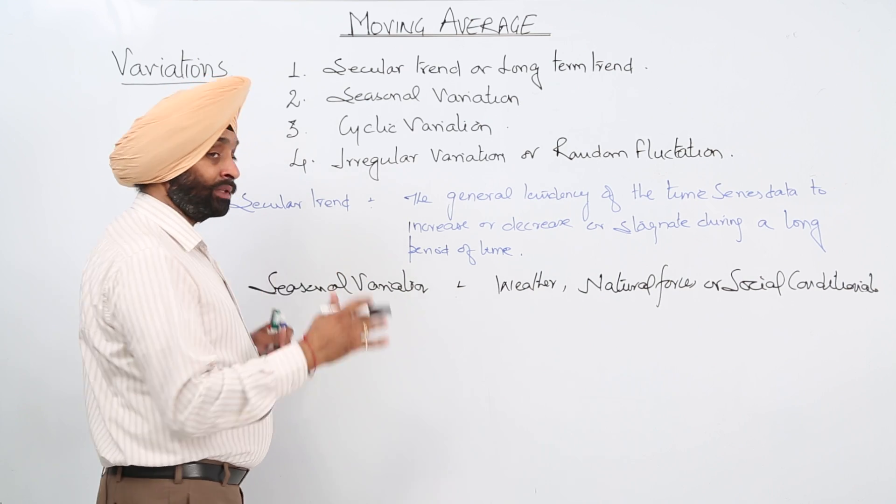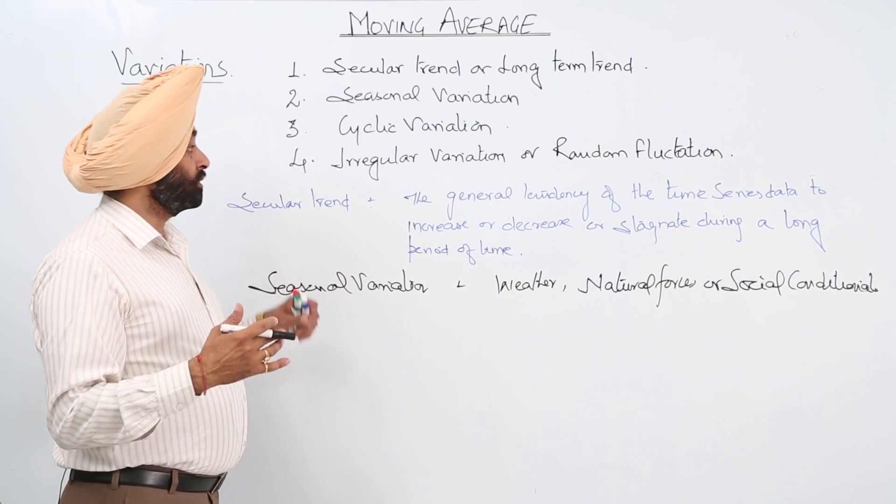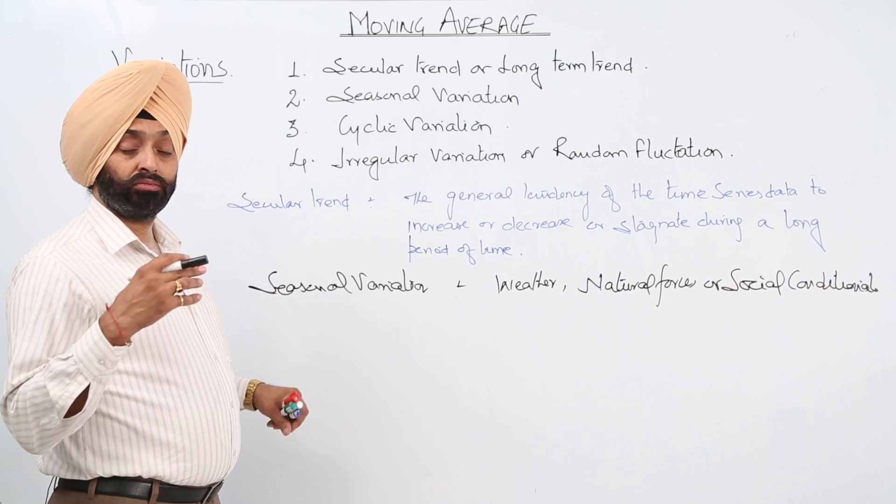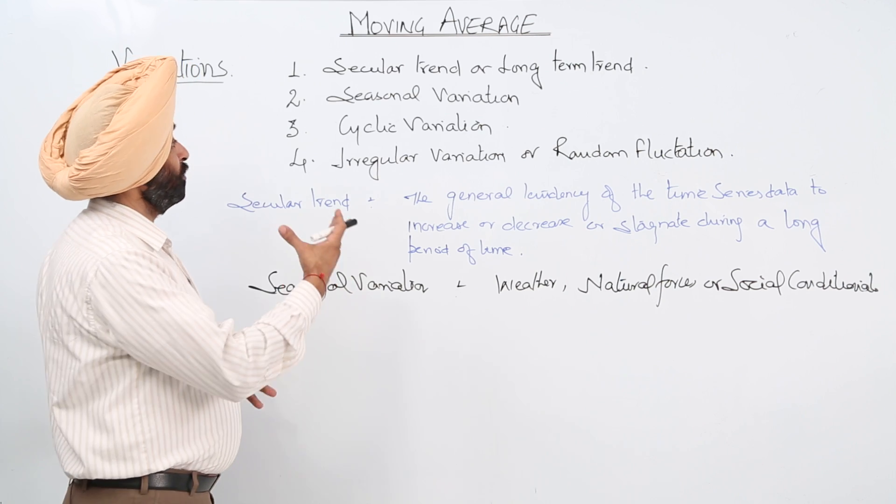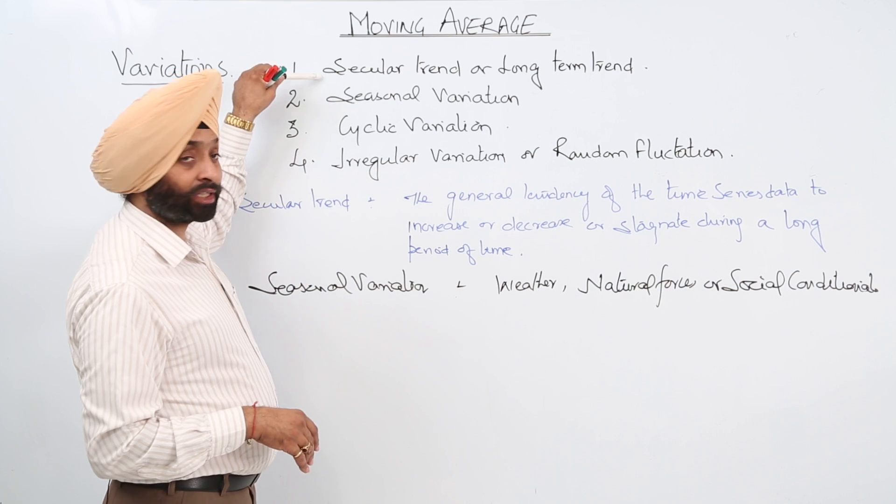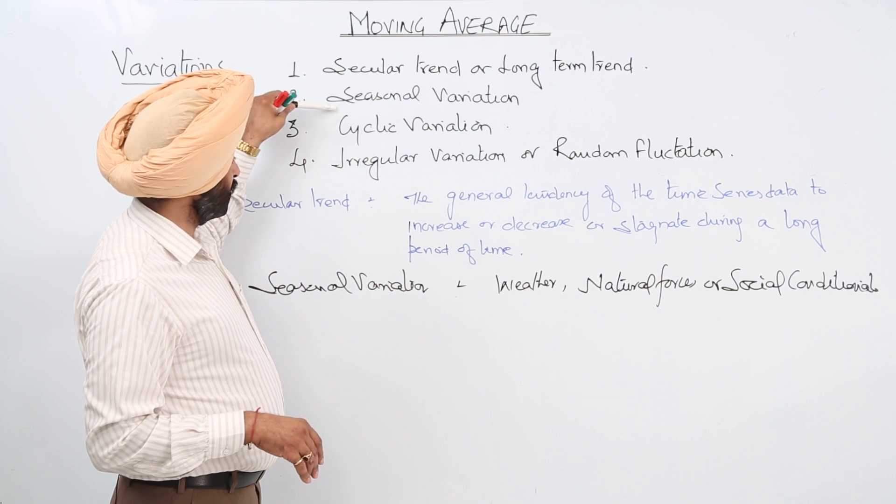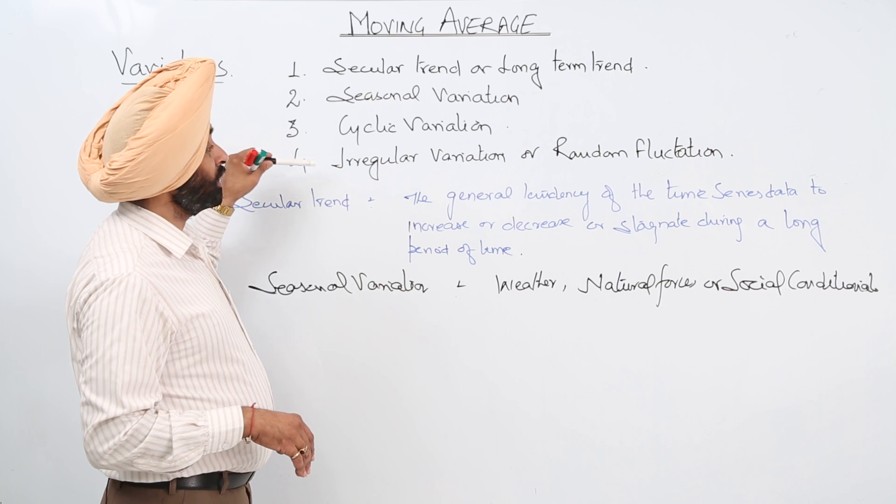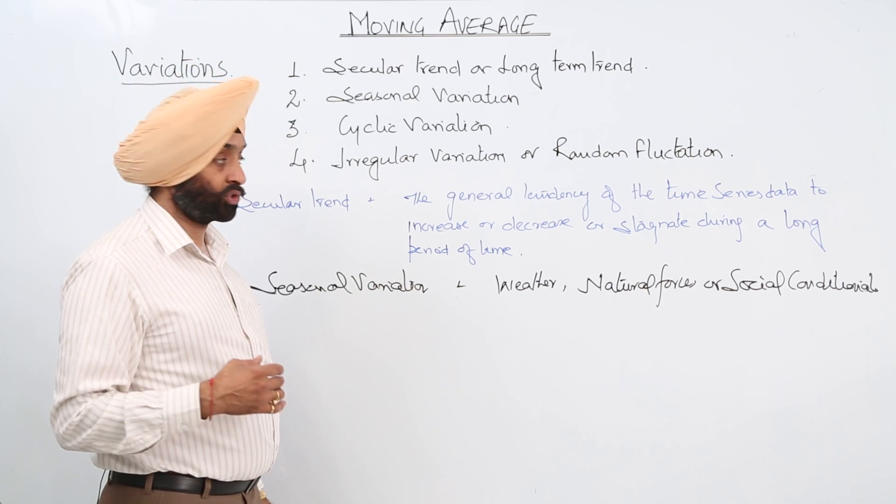So these are some examples and I just want to convey you that basically what terms we are going for the moving average. Once again, secular trend or long term trend, seasonal variation, cyclic variation, or irregular variation or a random fluctuation.